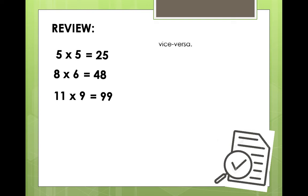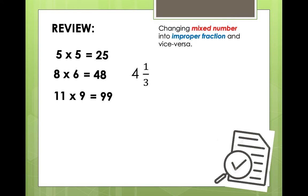Now, let us have a recap about changing mixed numbers into improper fractions and vice versa. For instance, we have 4 and 1 third. We have to rewrite it into improper fraction. First, we need to multiply the denominator and the whole number, and after that we add the numerator. So, 3 times 4 equals 12, plus 1 equals 13, and we have 13 over 3. Just copy the denominator.